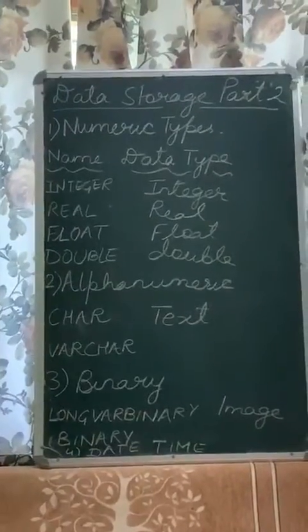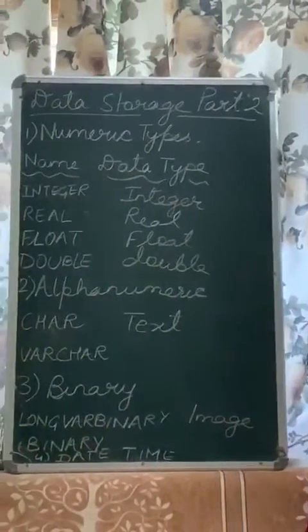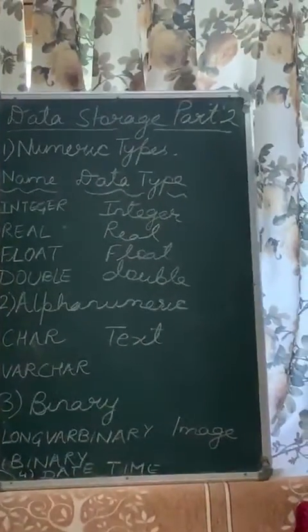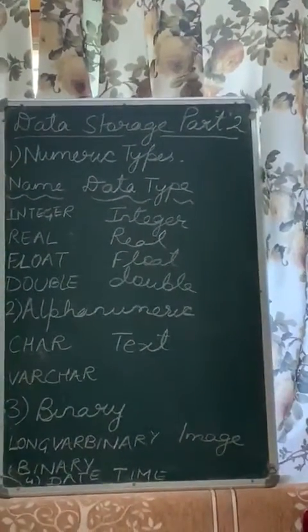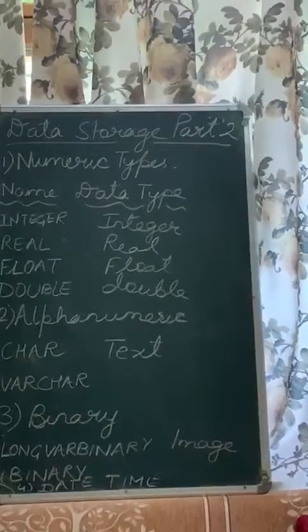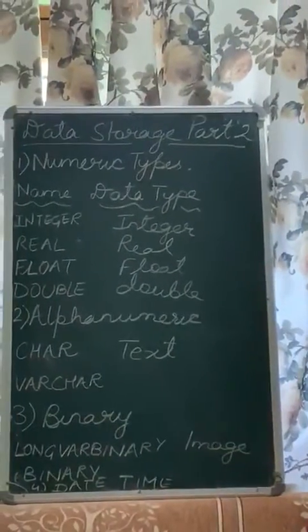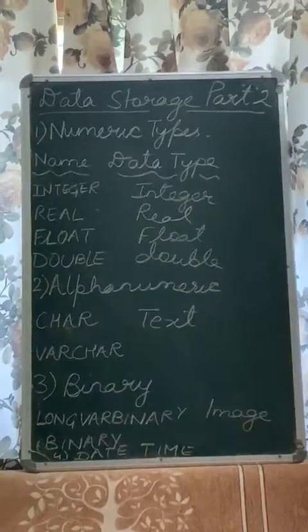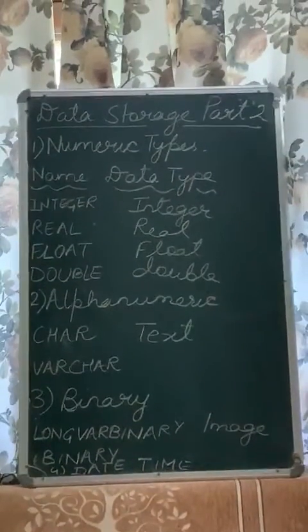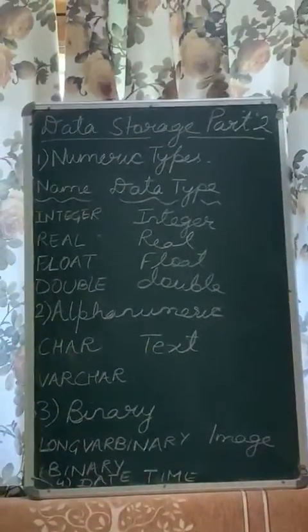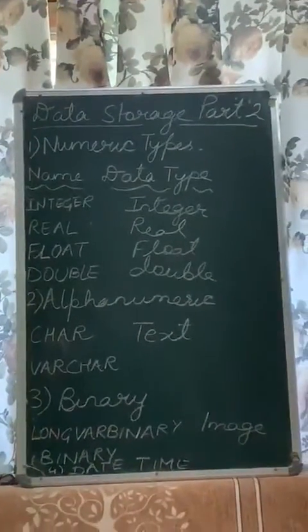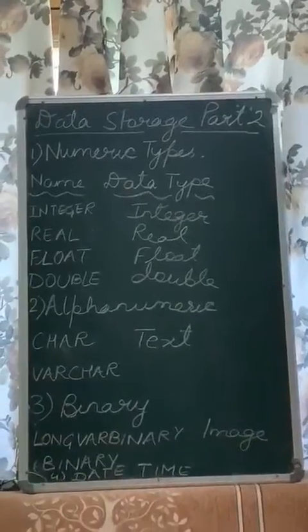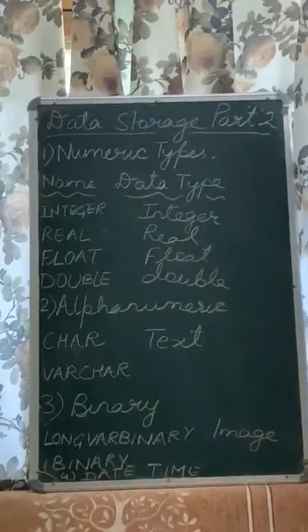The first category is numeric type. Numeric data types are used for describing the numeric values for the field used in the table of a database. These numeric data types can be used for storing information such as mobile number, roll number, year of school admission, and other statistical values like marks.